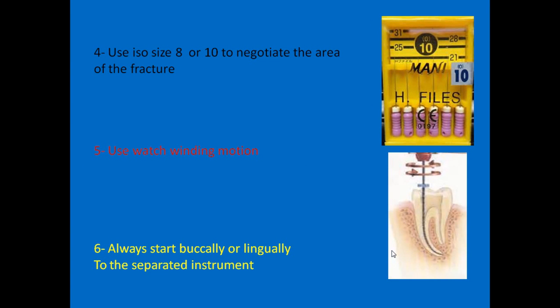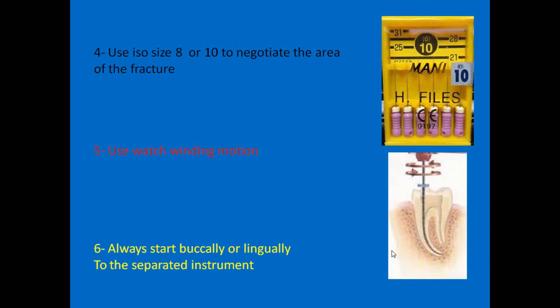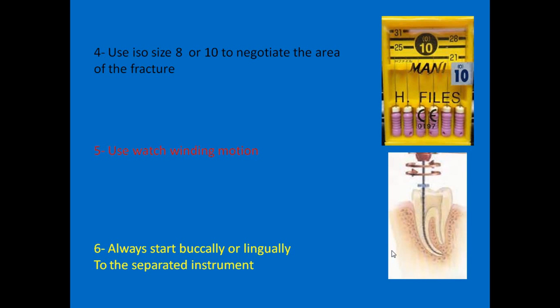Use ISO size 8 or 10 to negotiate the area of the fracture, as these are the fine instruments that may bypass the fractured instrument. Using a watch-winding motion is important to prevent entanglement of the size 8 file inside the dentine or between the dentine and the separated area. Always start buccally or lingually to the separated instrument, and never use force, as this will block the very tiny spaces that may favor bypassing.